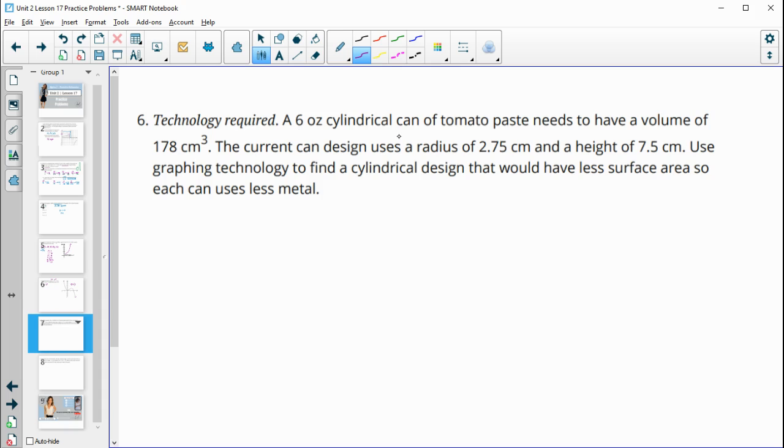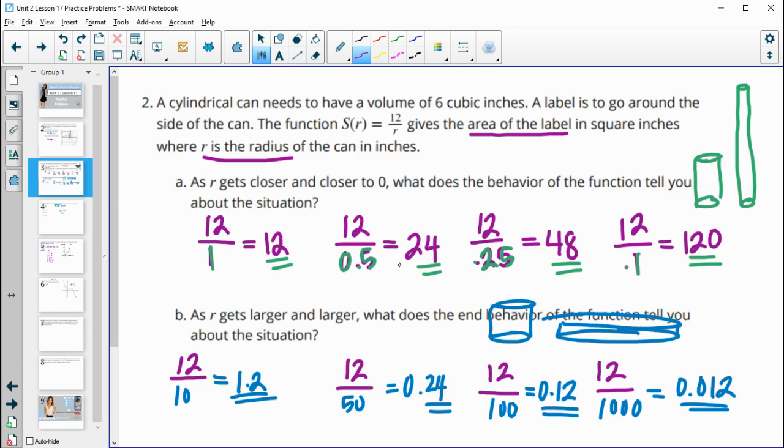Number 6, a 6-ounce cylindrical can of tomato paste needs to have a volume of 178 cubic meters. The current can design uses a radius of 2.75 centimeters and a height of 7.5. Use graphing technology to find a cylindrical design that would have less surface area, so each can uses less metal. So I'm not necessarily going to use graphing technology to talk about this. But if we think back to this problem, we said that if the radius gets smaller, the surface area gets larger. And if the radius gets larger, the surface area gets smaller.